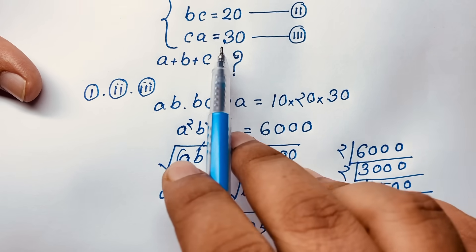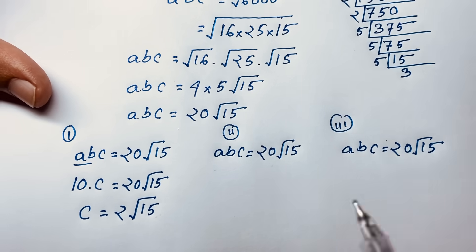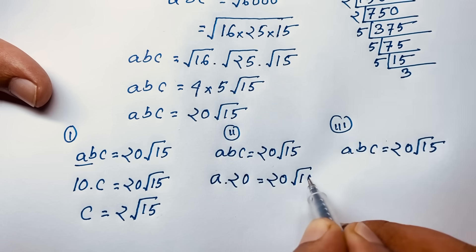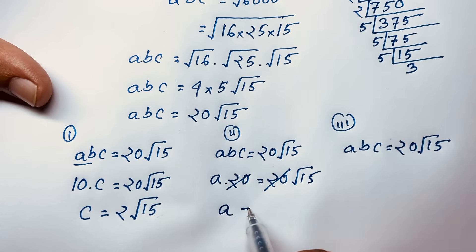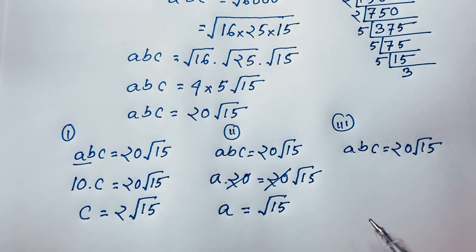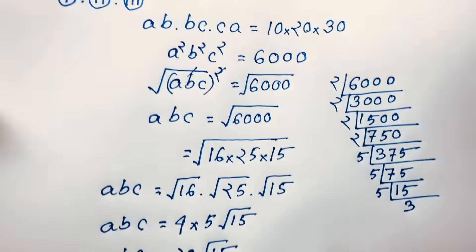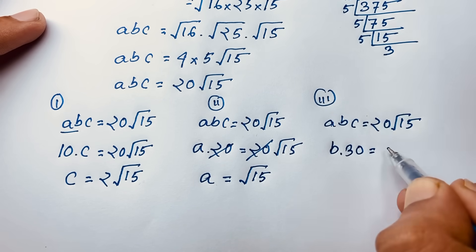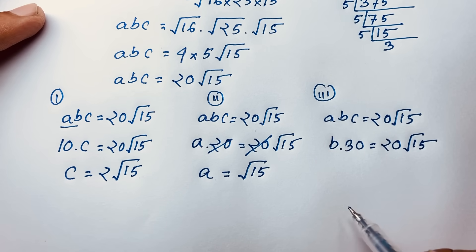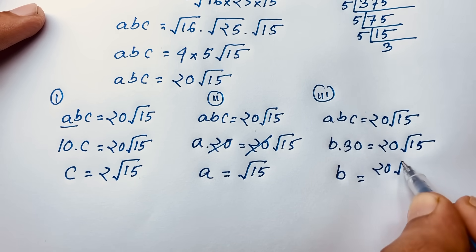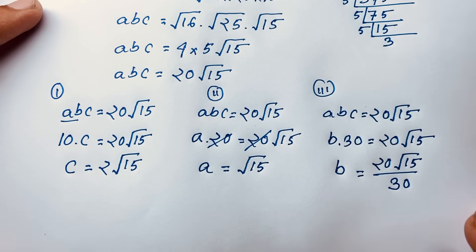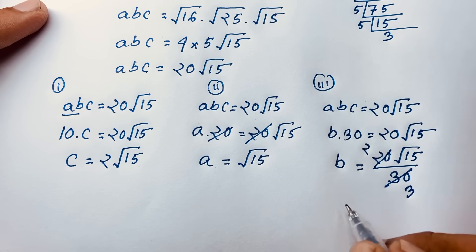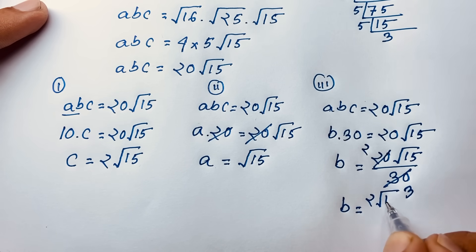Next, recall BC equals 20. Substituting BC equals 20 into ABC equals 20√15, we get A times 20 equals 20√15. The 20s cancel, so A equals √15. Then recall CA equals 30. Substituting CA equals 30 gives B times 30 equals 20√15. Dividing both sides by 30: B equals 20√15 over 30, which simplifies to 2√15 over 3.